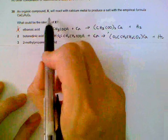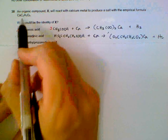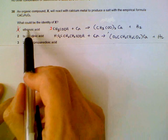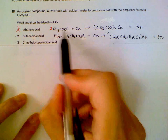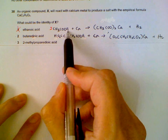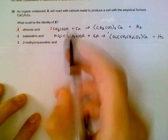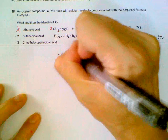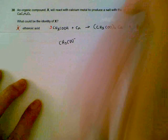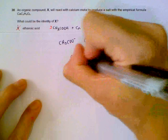Question 38: which acid gives a salt with the empirical formula CaC4H4O4? First, we check ethanoic acid. The formula of ethanoic acid is CH3COOH — it can only release one hydrogen ion per molecule, so the ethanoate ion will be CH3COO minus, and calcium is 2 plus.